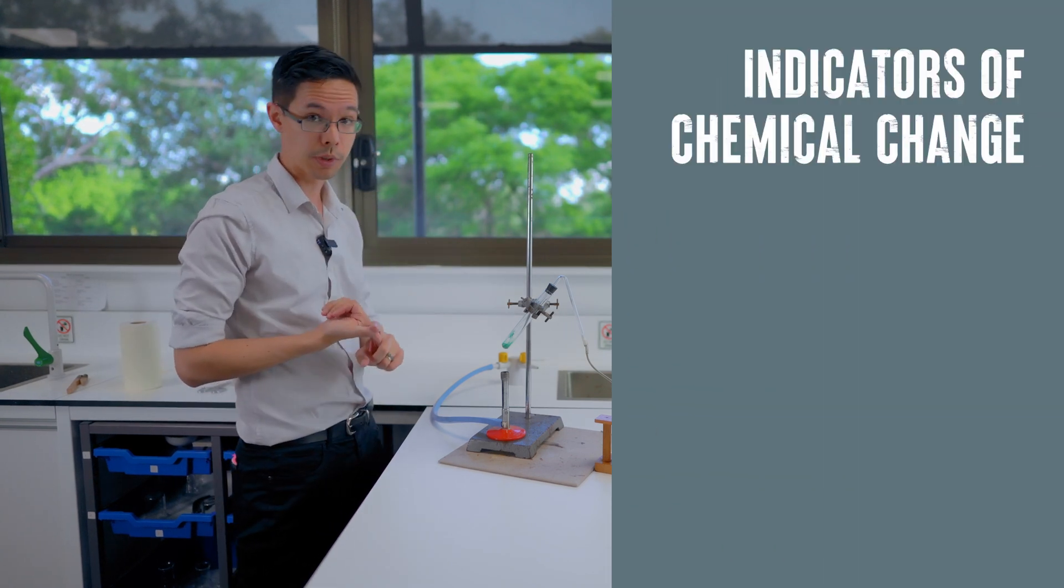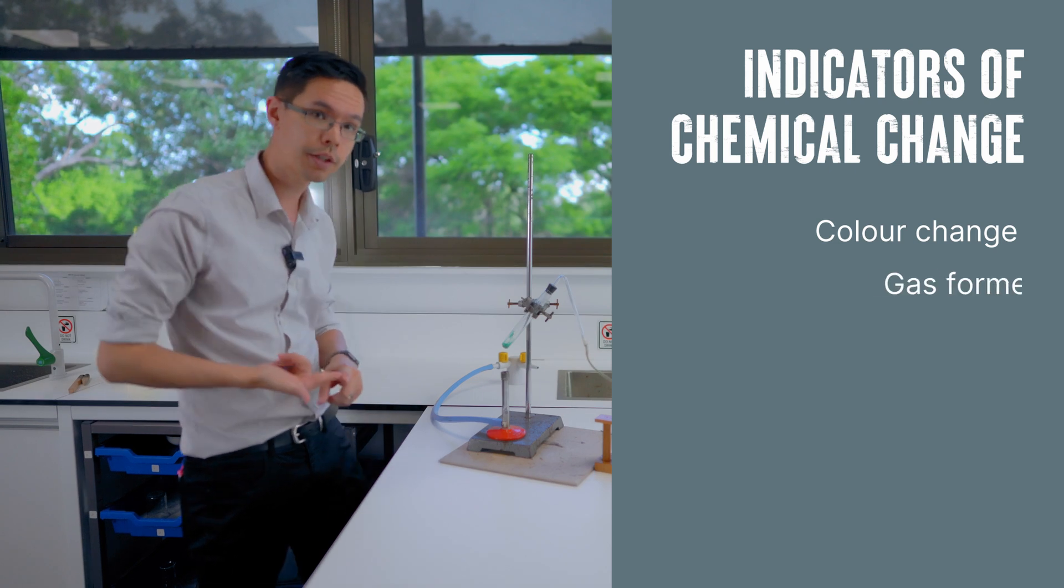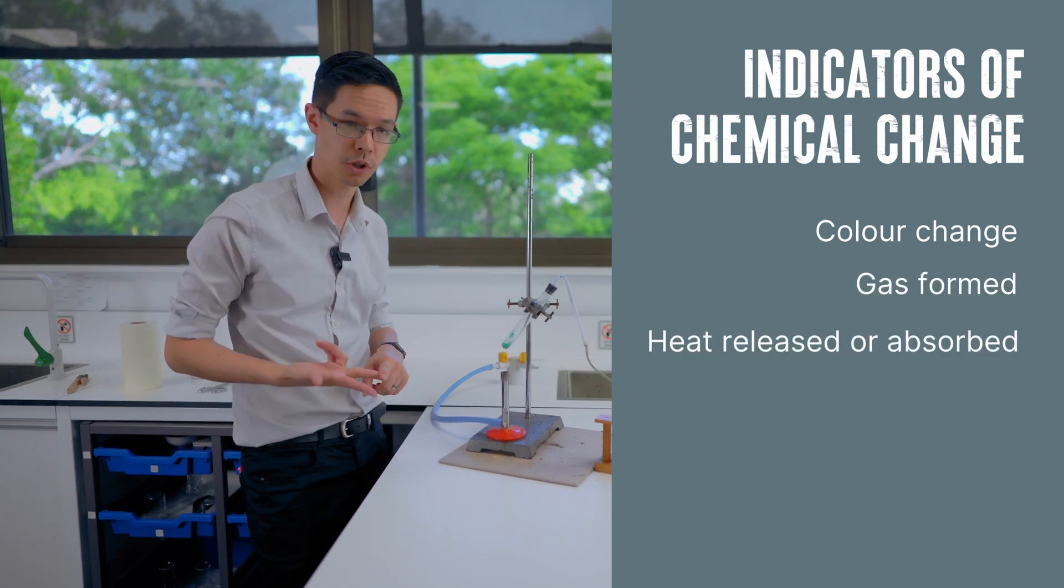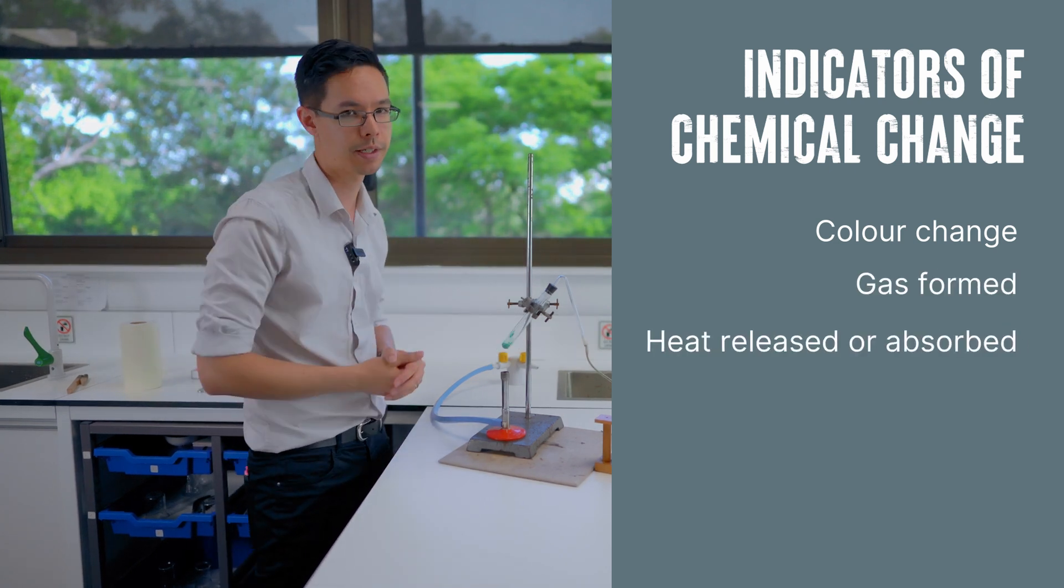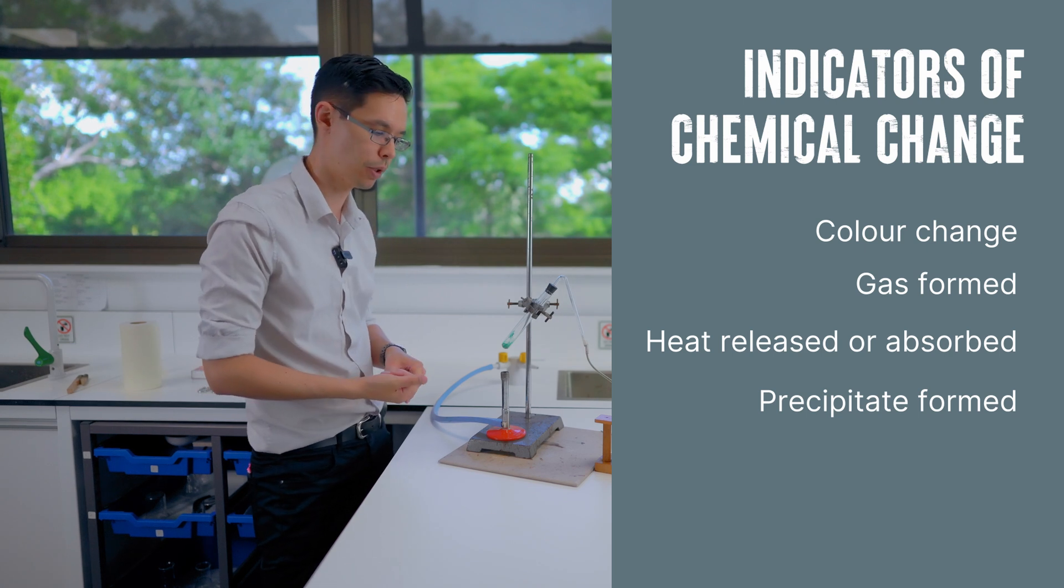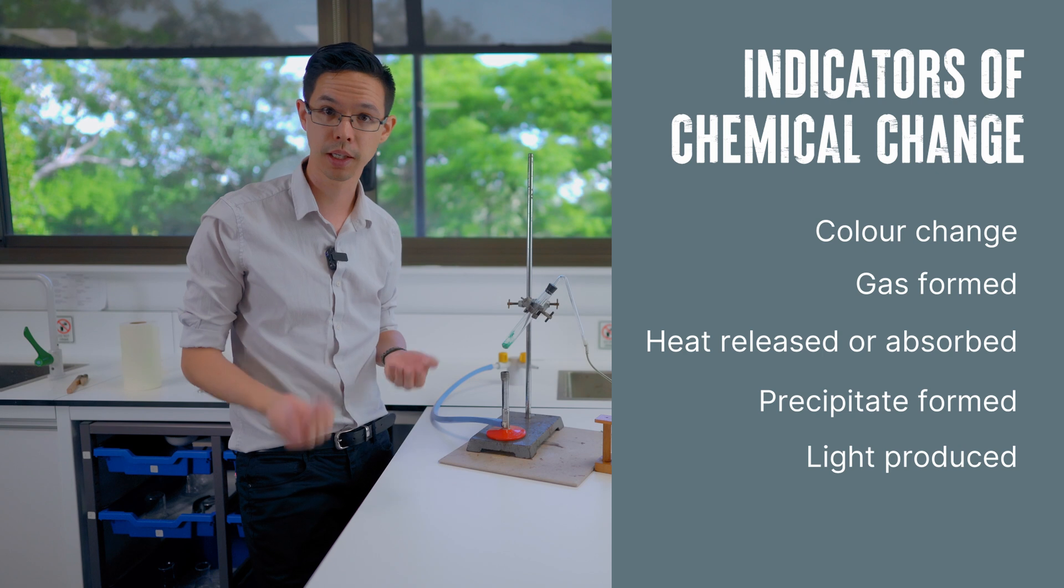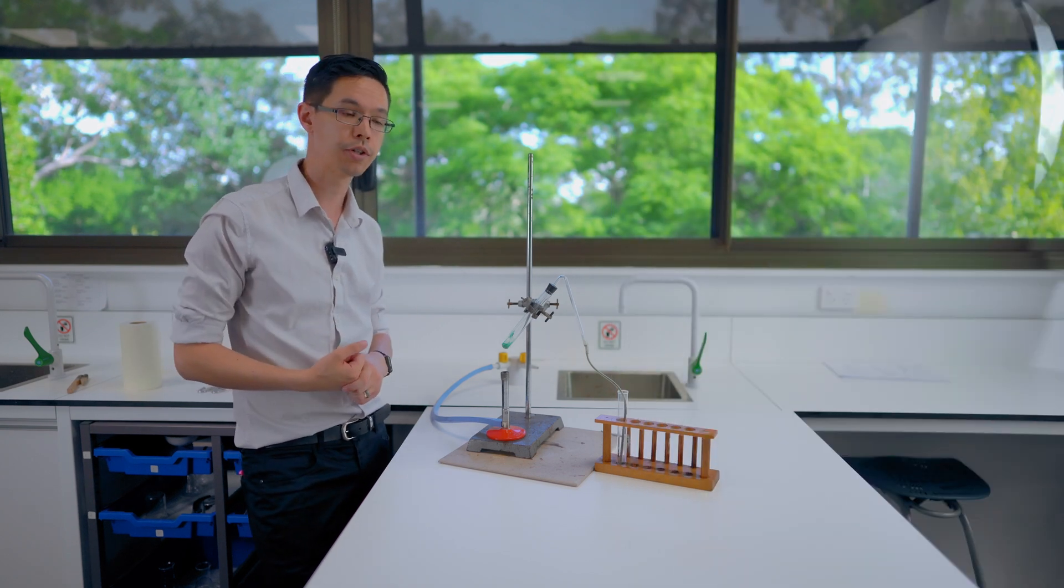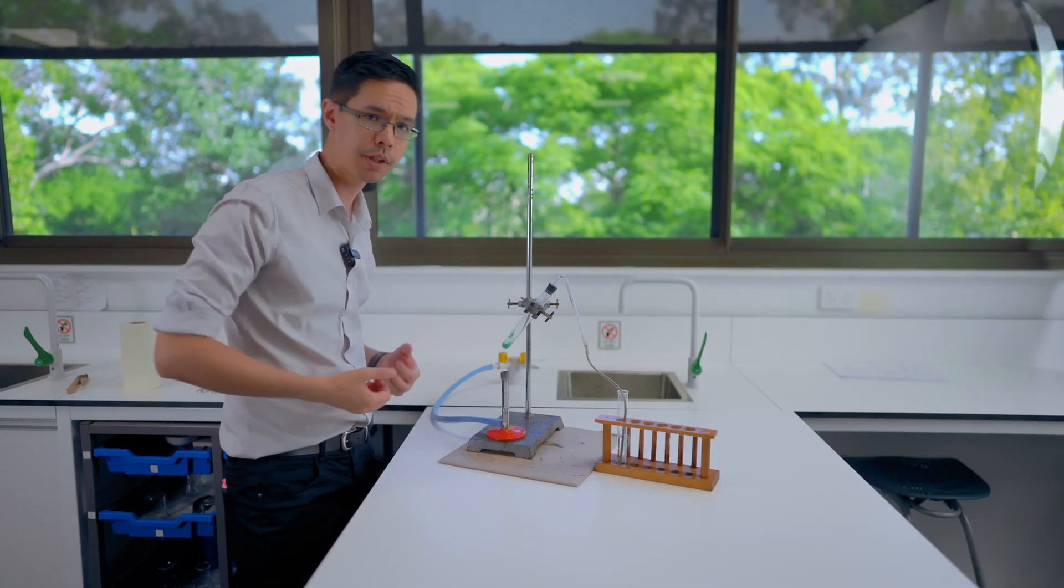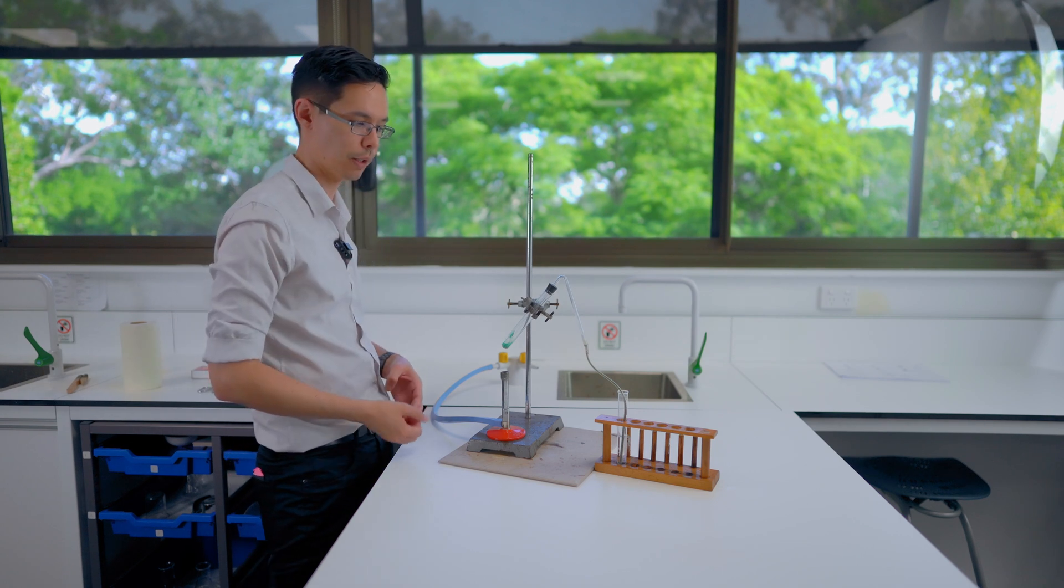Rather than just sitting there going, oh wow, pretty colors, I want you to keep your eyes open for the main types of indications of a chemical change occurring. Do we see a color change? Do we see a gas being formed? Do we see a temperature change? Obviously I'm not going to be testing with my fingertips. Is it producing light? Is it producing heat? Those sorts of chemical indications give you clues, and I think you'll see some very obvious ones here in this experiment.